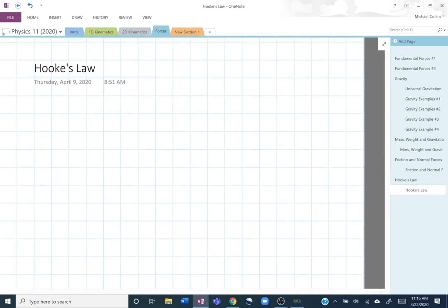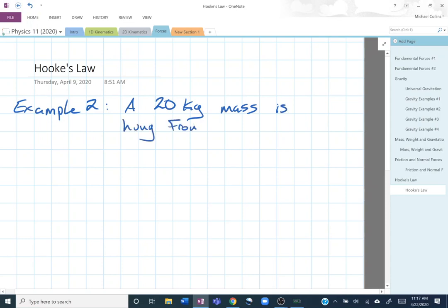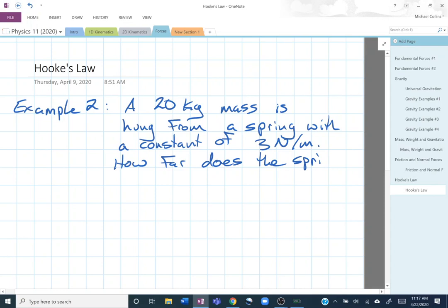Let's do one more example. Example two. A 20 kilogram mass is hung from a spring with a constant of three newtons per meter. How far does the spring stretch?